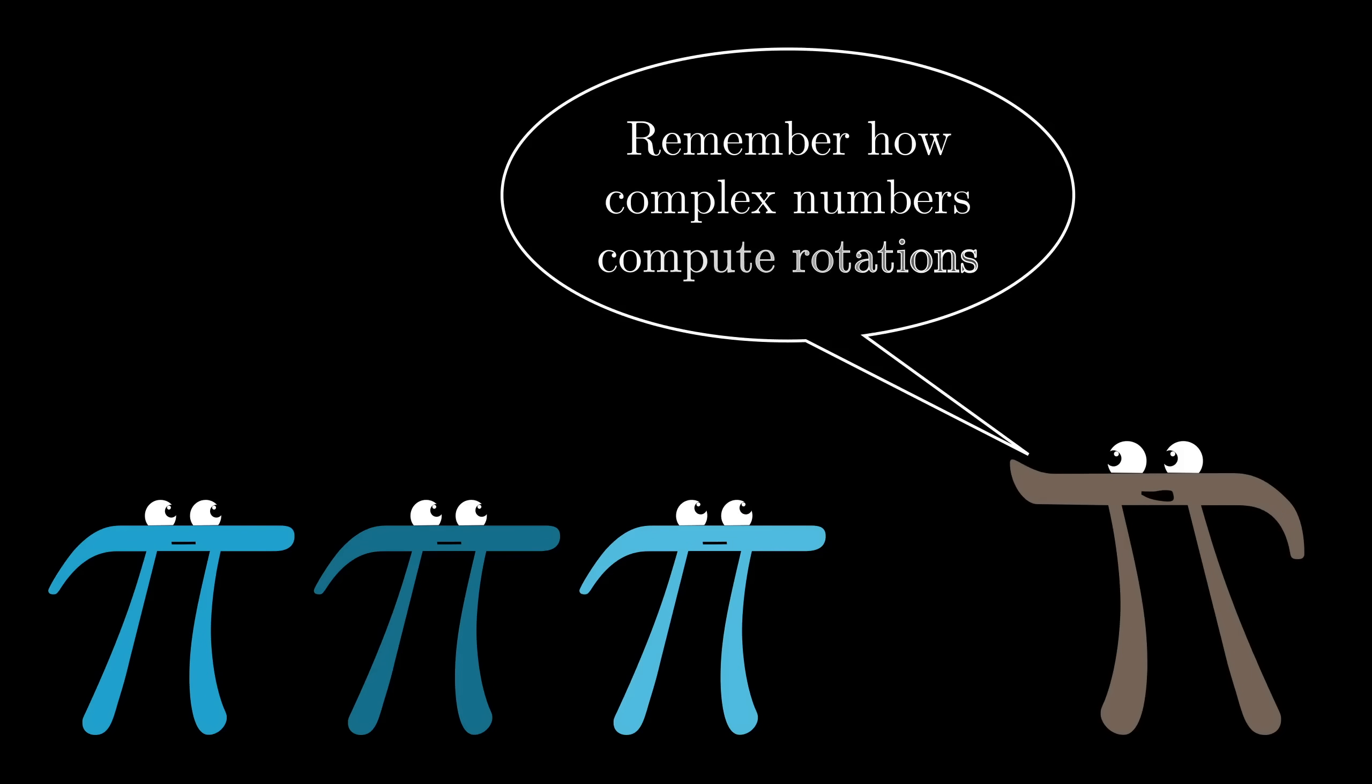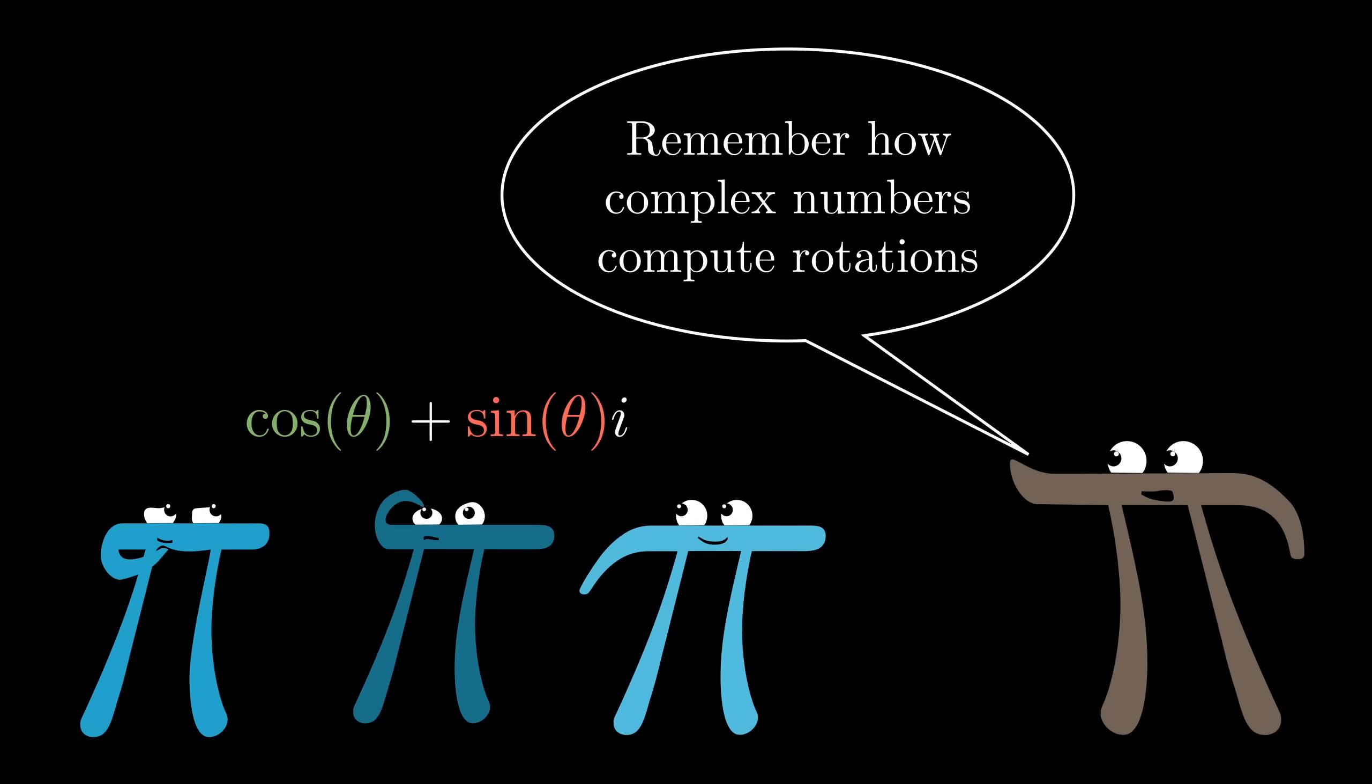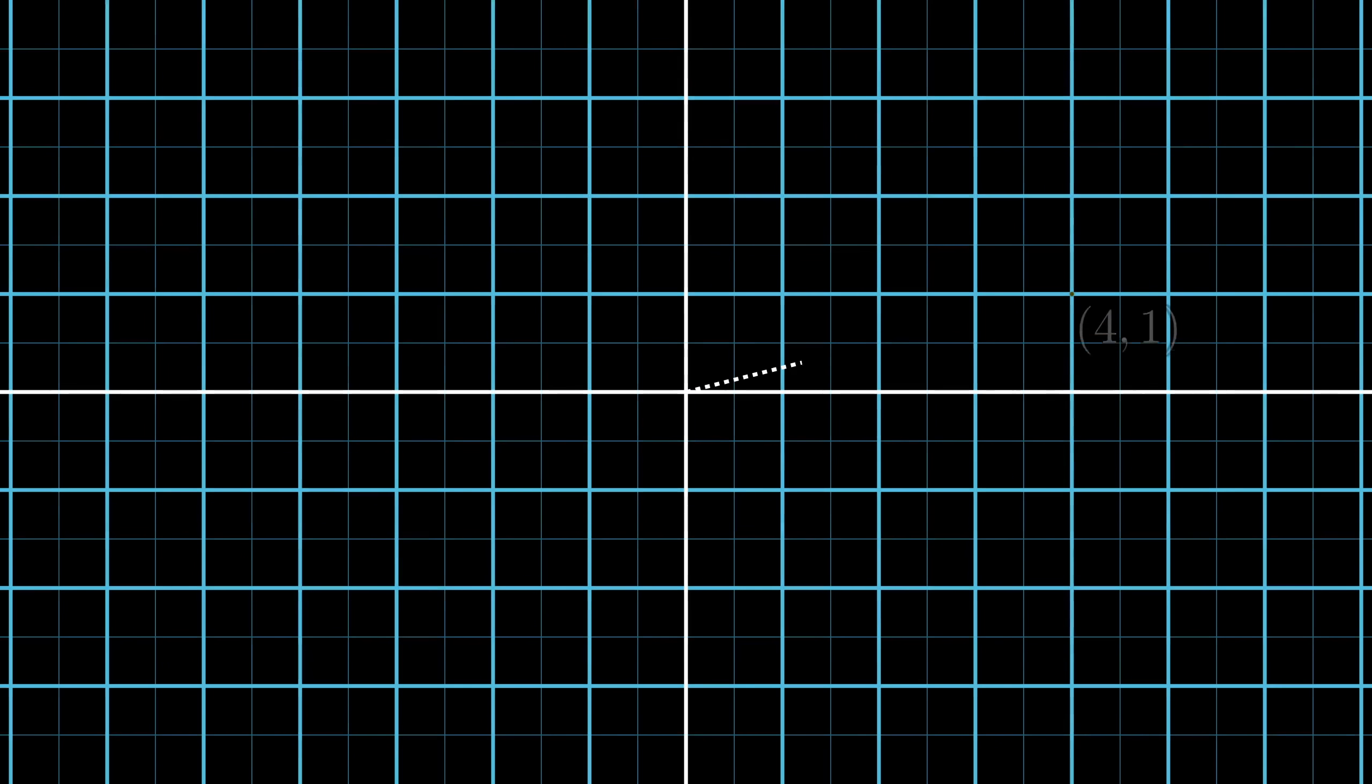To warm up to the idea of how multiplication in some higher dimensional number system might be used to compute rotations, take a moment to remember how it is that complex numbers give a sort of slick method for computing 2D rotations. Specifically, let's say you have some point in two-dimensional space, like 4,1, and you want to know the new coordinates you'd get if you rotate this point 30 degrees around the origin.